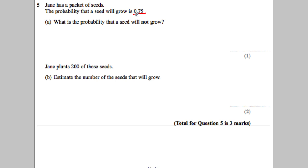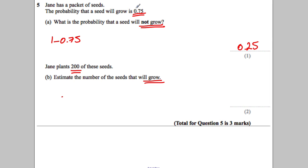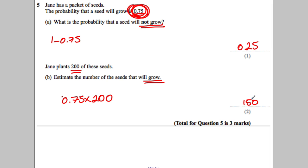Last question: the probability a seed grows is 0.75. The probability it will not grow is 1 − 0.75 = 0.25. She plants 200 seeds — estimate the number that will grow: P(grow) = 0.75, so 0.75 × 200 = 150. That's it for this video — hope you found that useful.